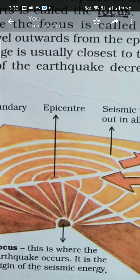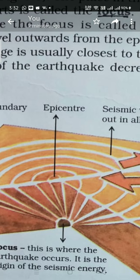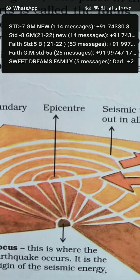Similarly, earthquake waves — which represent the force of the earthquake — travel in three types. One is called P waves, also known as longitudinal waves. Then there are S waves, also known as transversal waves. And finally, L waves, which are surface waves. You will get more details about these waves as you grow.